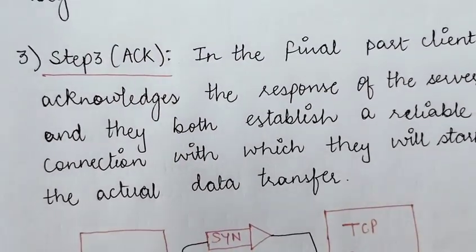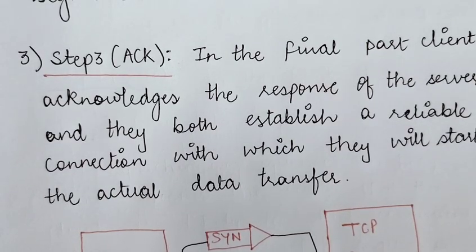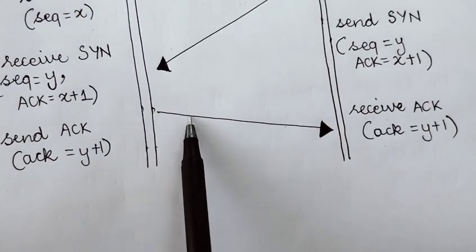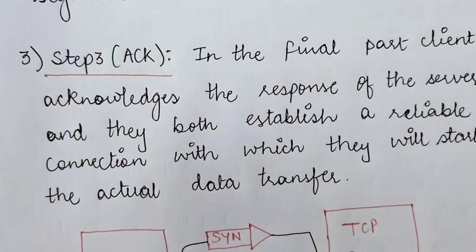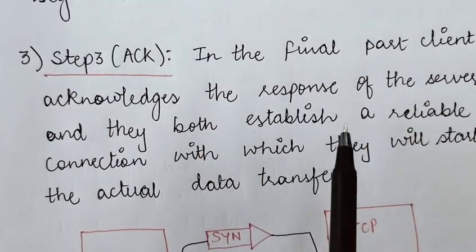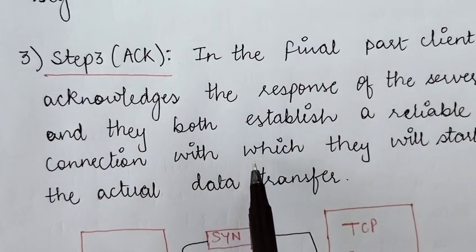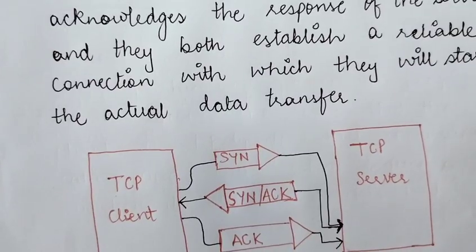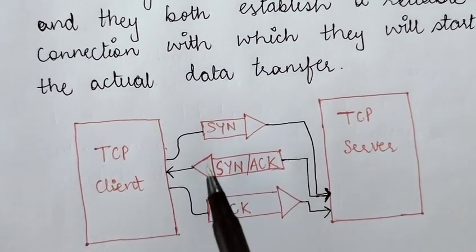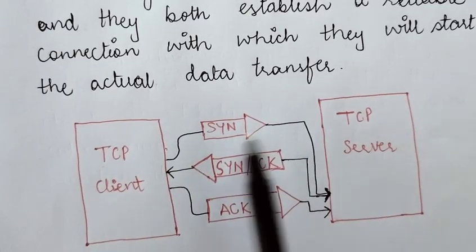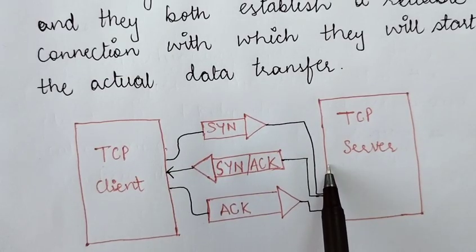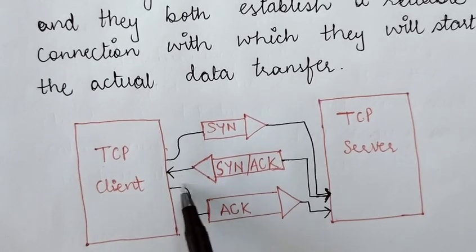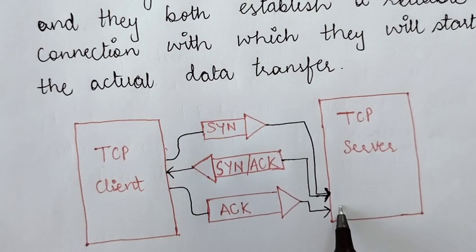Step three is the acknowledgement, which is the final step. The client acknowledges the response of the server and they both establish a reliable connection. After this final acknowledgement, a reliable connection is established and they will start actual data transfer. So these three steps — the client sending SYN, the server responding with SYN+ACK, and the client sending ACK — are known as the three-way handshake of connection establishment.